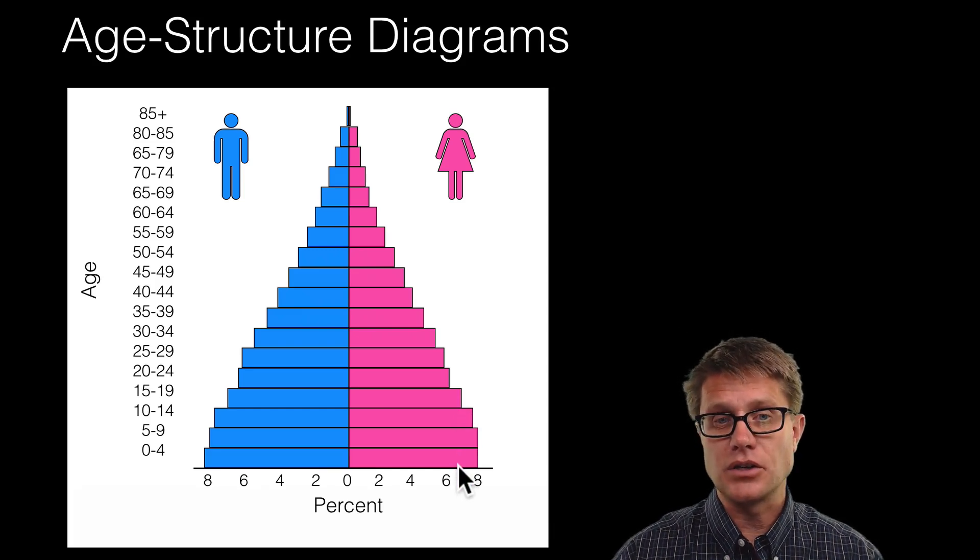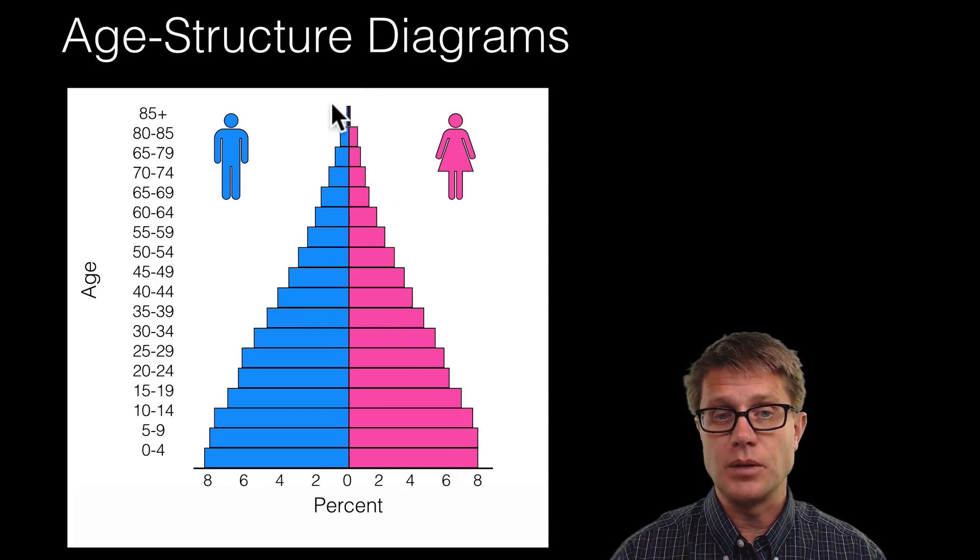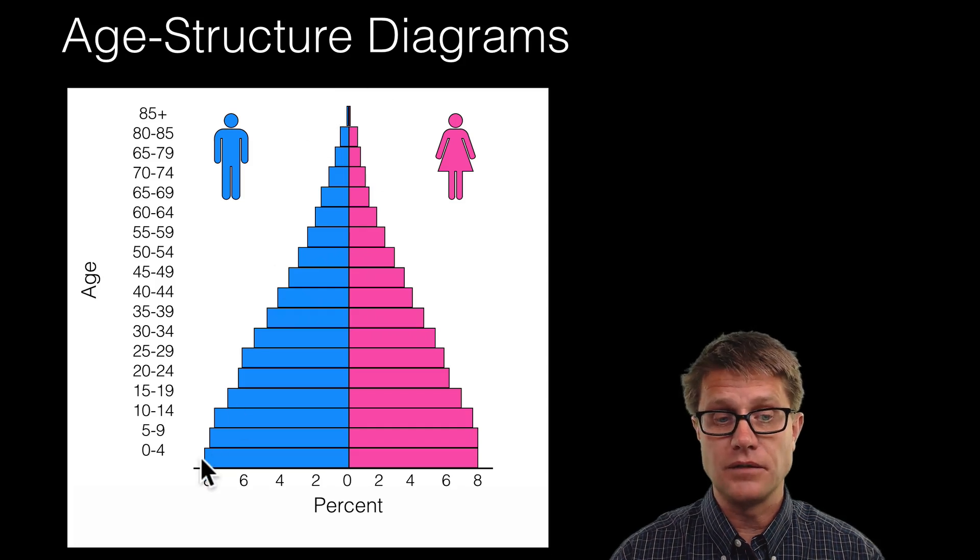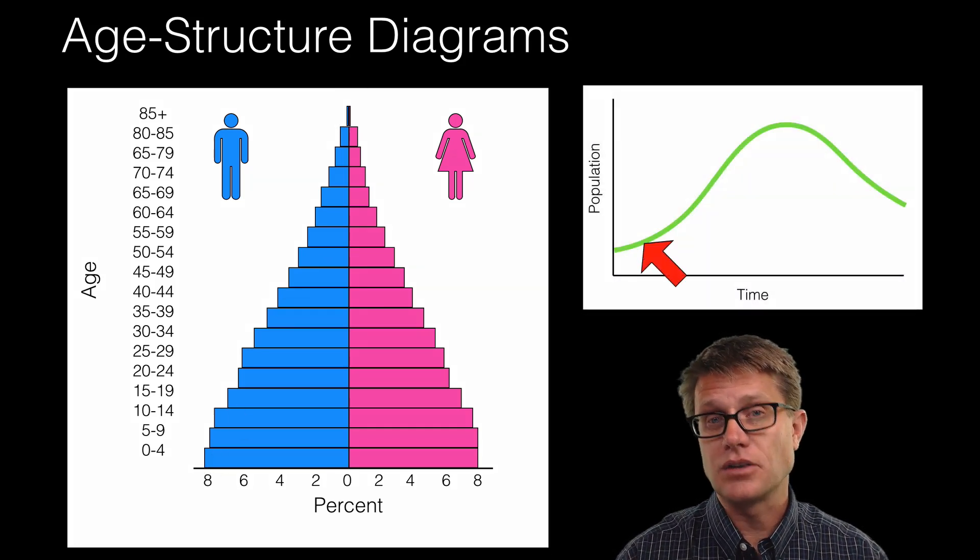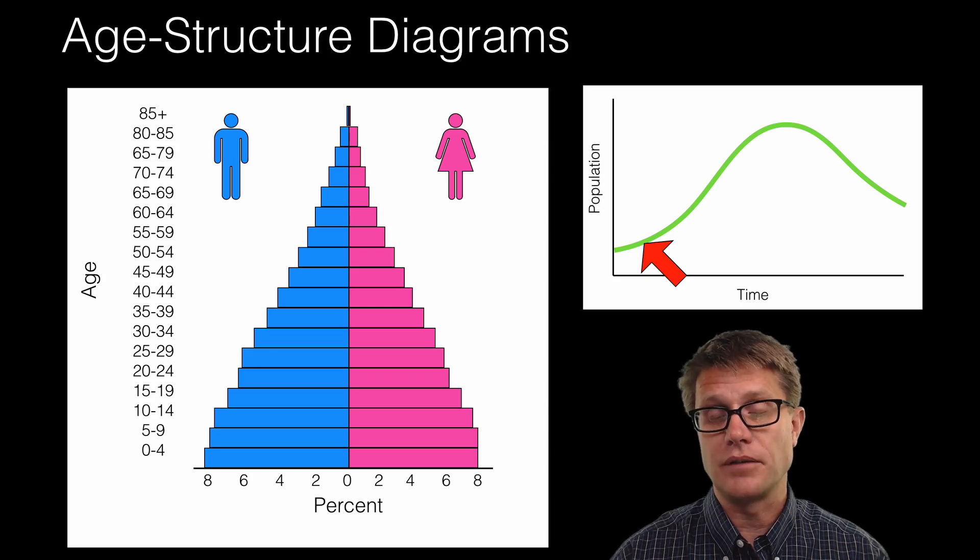Now if we see an age structure diagram like this where we do not have many people that are very old and we have lots of young people, this is going to be a population that is just increasing, just going through that demographic transition.